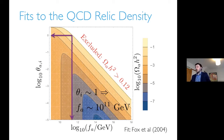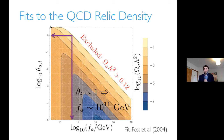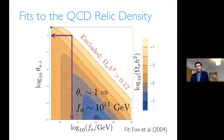You can also get heavier axions with smaller decay constants if you take the initial field value up towards pi. Tomorrow we will talk about scenario A and how to search for axion dark matter.